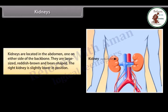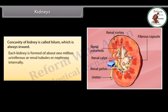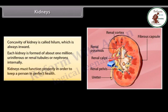Kidneys are located in the abdomen, one on either side of the backbone. They are large-sized, reddish-brown, and bean-shaped. The right kidney is slightly lower in position. The concavity of the kidneys is called the hilum, which is always inward. Each kidney is formed of about one million uriniferous or renal tubules, called nephrons.